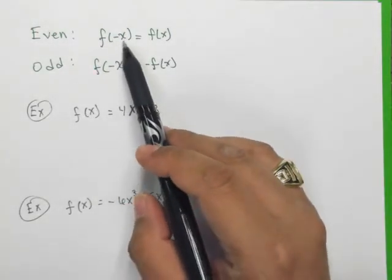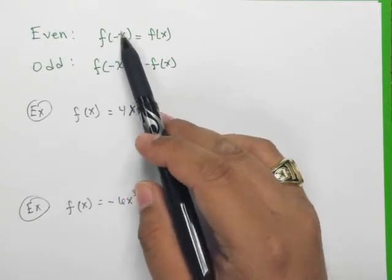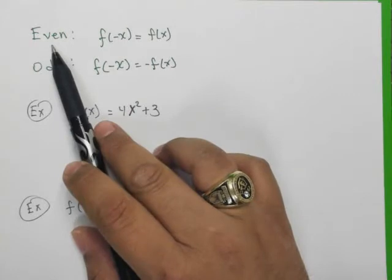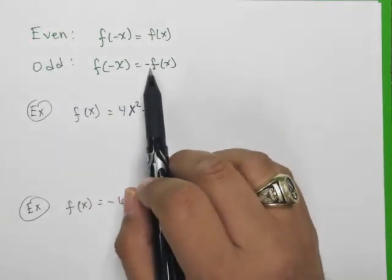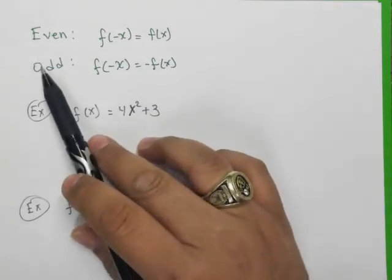So we have f of negative x. What we do in the function is we plug in a negative x, and if it outputs f of x, which was the original function, we say then that it's even. If we plug in negative x and we get the opposite of f of x, meaning the signs change completely, we say that it's odd.